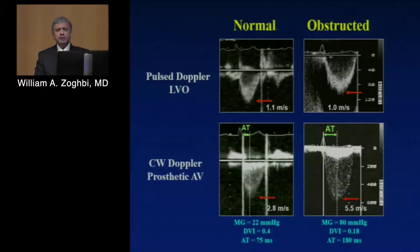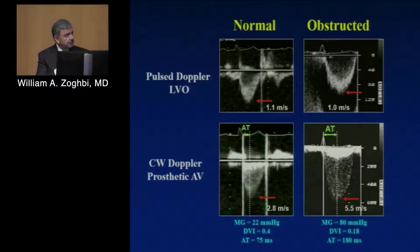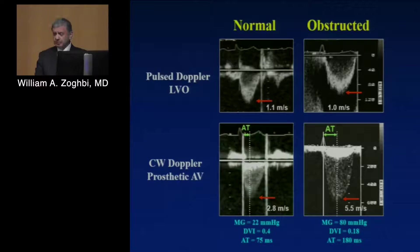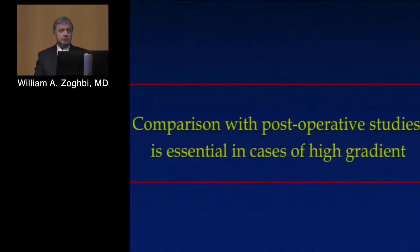Here are two examples — normal and obstructed, these are extremes. Notice that ejection time is much longer for a similar flow in the obstructed case. The peak velocity is later, the velocity itself and mean gradient are higher, and the Doppler Velocity Index is much lower. One important thing to note for prosthetic valves is the acceleration time — from the time of the opening click to the maximal velocity. Normally it should be less than 80 milliseconds. If it is more than 120 to 130 milliseconds, you can almost take it to the bank that you have an obstructed valve.